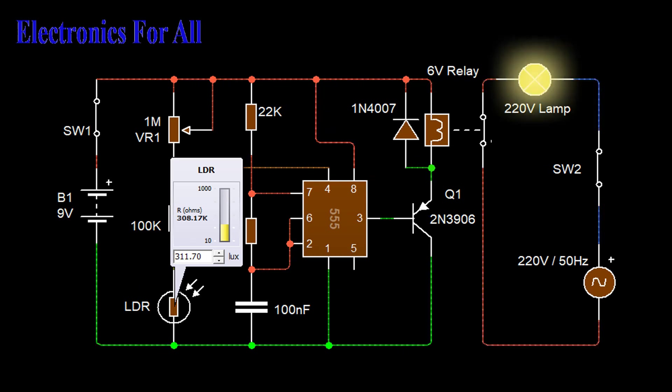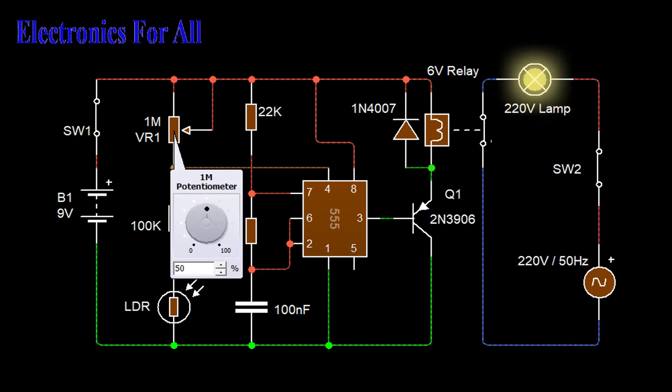Before going to explanation, the circuit should be assumed on and is off in the presence of light. This condition, off in the presence of light, can be achieved by adjusting the 1 mega ohm trim pot.